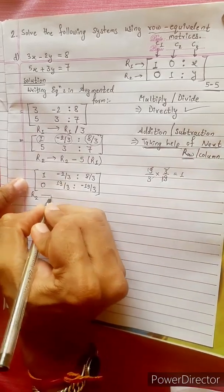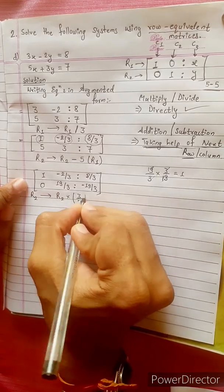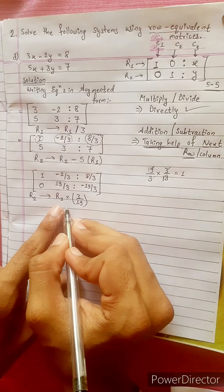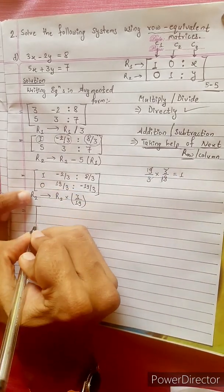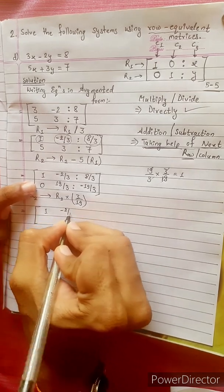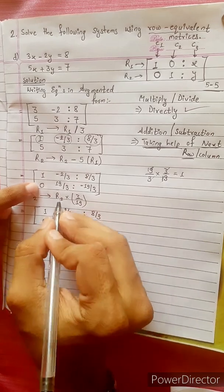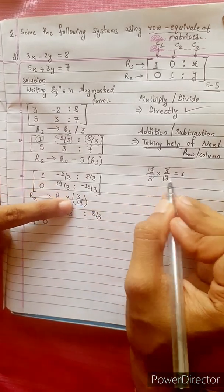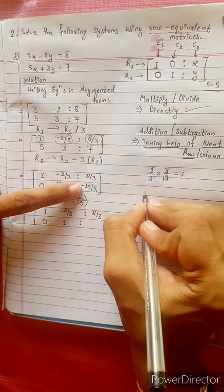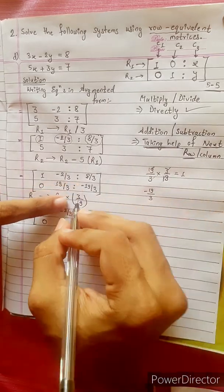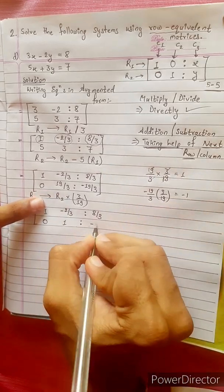R2 change into R2 multiply by 3 by 19. Multiply, divide, and direct will be equal to R1. R2 by 3, 8 by 3, 0 into something 0. 19 by 3, 3 by 19, 1 is 2. R2 by 3 by 2, minus 19 divided by 3. The formula is 3 by 19. R2 by 1, minus 1. 1 is 0, and 1 is 0.